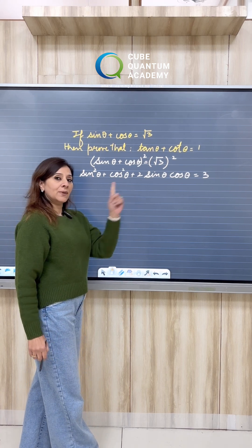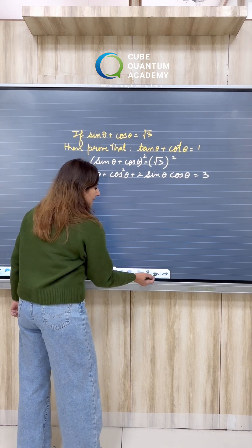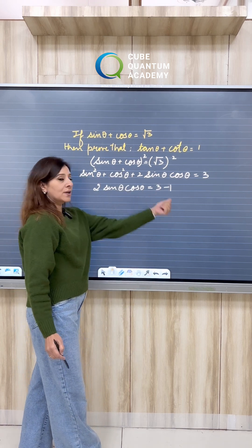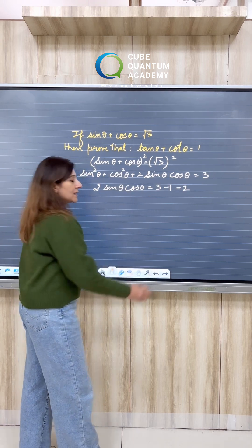Now, sin square theta plus cos square theta is 1. So, 1 goes to the other side and gets subtracted, and we get 2 sin theta cos theta is equal to 3 minus 1 which is equal to 2.